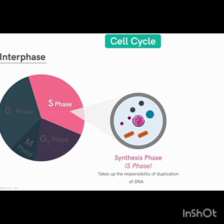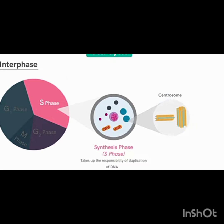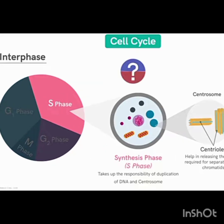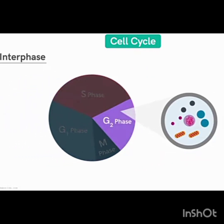In S phase, DNA replication takes place and the centrosomes also duplicate. The centrosomes have hair-like structures called spindle fibers. These spindle fibers help by releasing thread-like structures for the separation of sister chromatids. Once the sister chromatids are formed, the spindle fibers help pull them toward the opposite poles of the cell. That is the purpose of the centrioles and centrosomes.